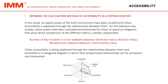For the selected case studies, these assets have been evaluated and presented by means of spectrum diagrams that allow direct comparison of the different metrics, namely: number of key functions in 5 minutes walkable distance, generator value, attractor value, betweenness, network measure, and intermodality value. Urban accessibility is explained through the relationships between them and presented in a hexagonal diagram in which their proportional relationships can be compared and interpreted.